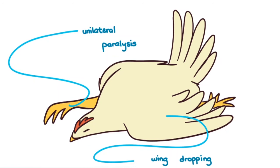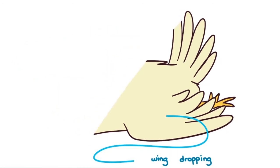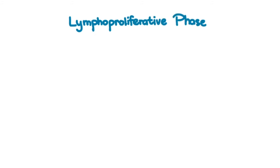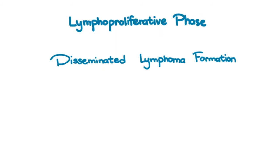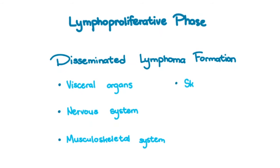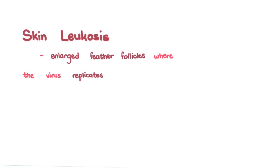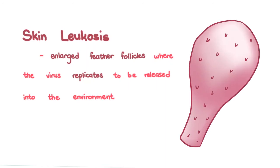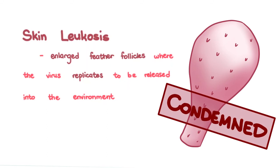In acute disease, birds may only show depression, then die. A lymphoproliferative phase can also occur when reactivated, whereby disseminated lymphoma formation occurs in visceral organs, the nervous system, the musculoskeletal system, skin, and eyes. The term skin maricosis refers to enlarged feather follicles where the virus replicates to be released into the environment. This may be seen during meat inspection when broilers are de-feathered, condemning the meat. The legs may have a distinct red coloration, hence this is sometimes called red leg syndrome.